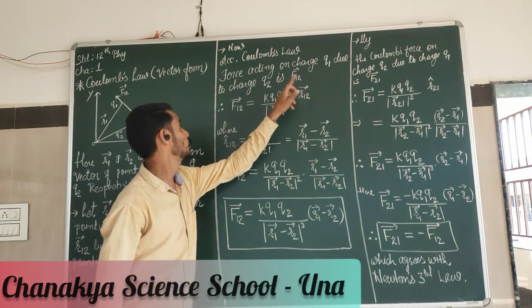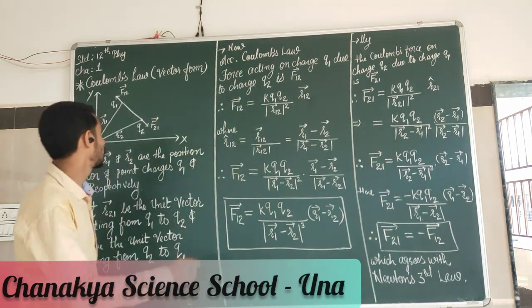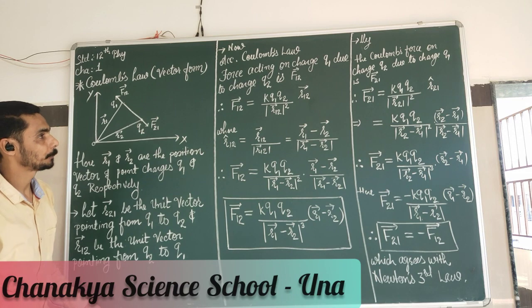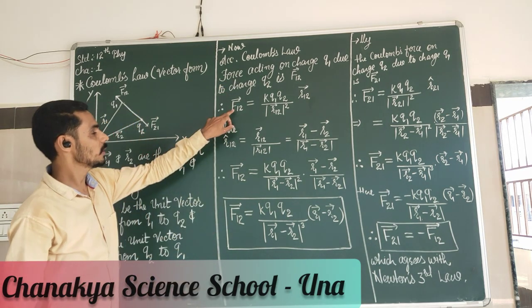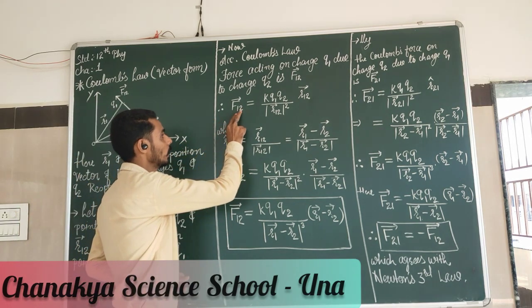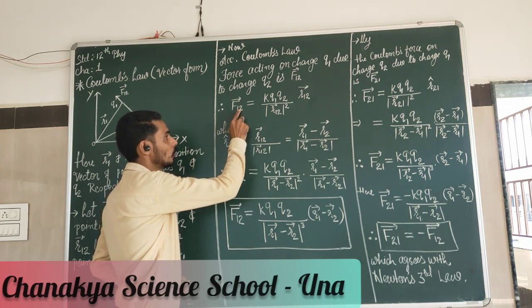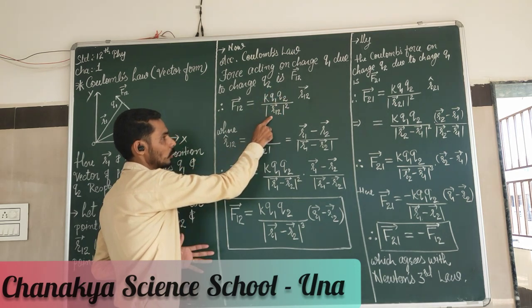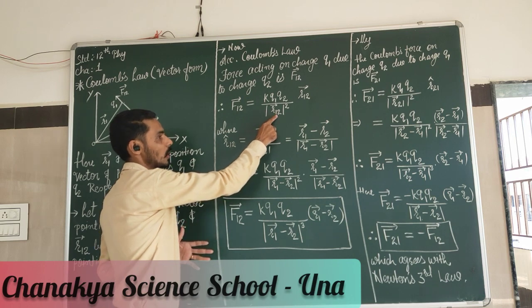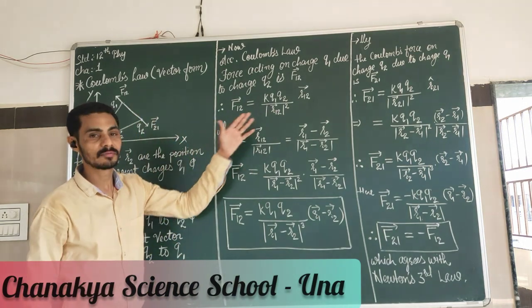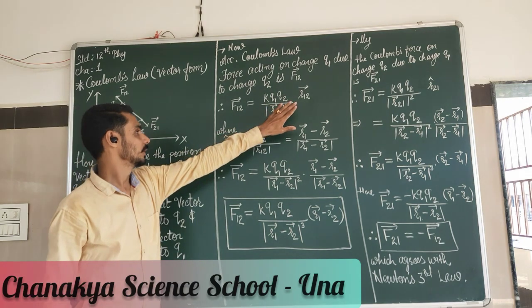Force acting on charge Q1 due to charge Q2 is F12. So as I mentioned, F12 is the force on 1 by 2 — meaning force on Q1 due to Q2. According to Coulomb's law in vector form, F12 equals K·Q1·Q2 divided by R12 squared, into the unit vector R̂12 showing the direction.